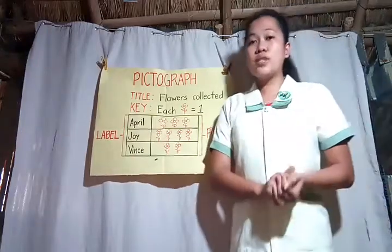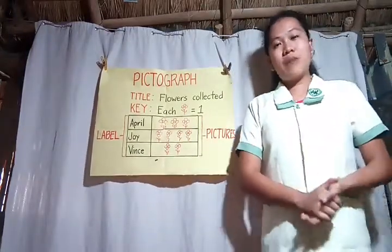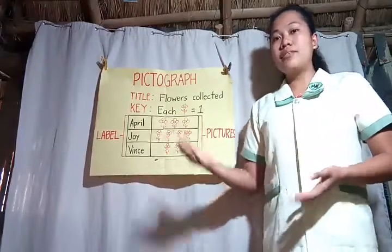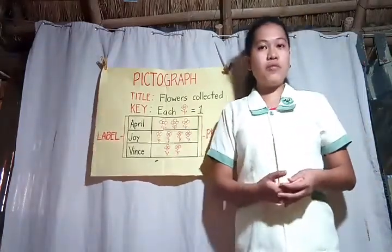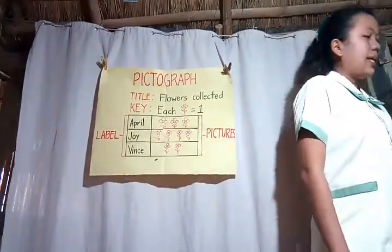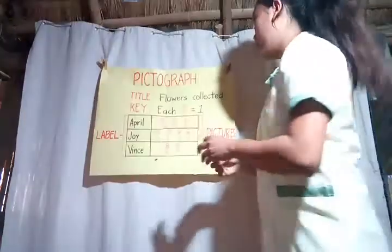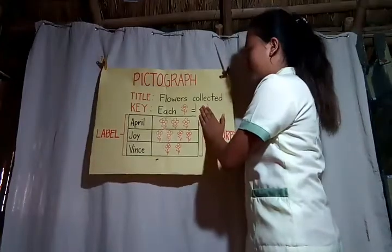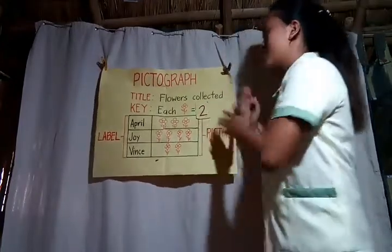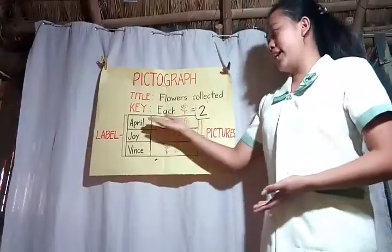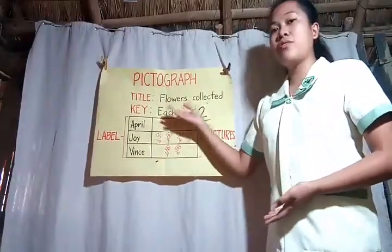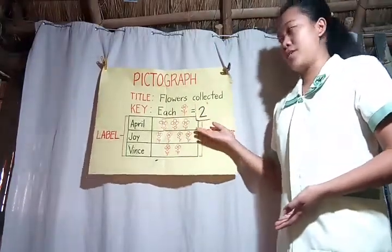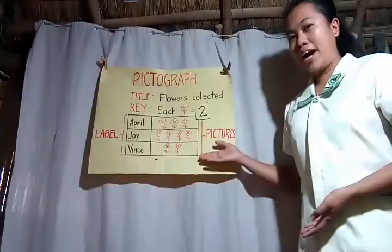We can also interpret data presented in a pictograph with the use of different scales. Let us use the scale of two. Now our key tells us that each flower picture is equal to two flowers.